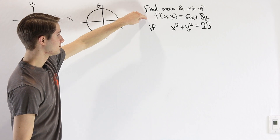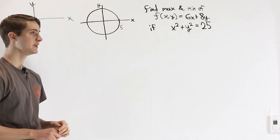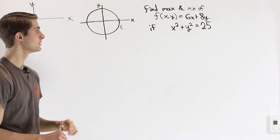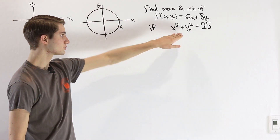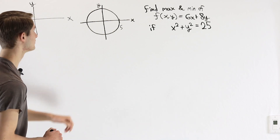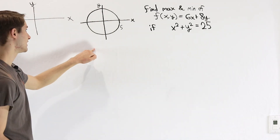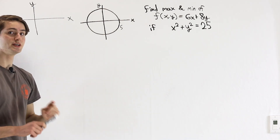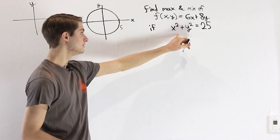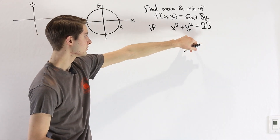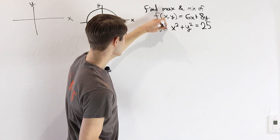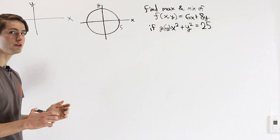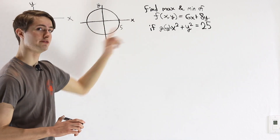We want to figure out how to optimize our function under that constraint, and to do that we're going to look at some interesting geometric properties. Let's start with the equation x squared plus y squared equals 25. We know we can describe that as a circle with radius 5 in the xy plane. In order to make progress on the idea of Lagrange multipliers, we're going to give this function, x squared plus y squared, a name — we're going to call it g — and look at some of its properties first.